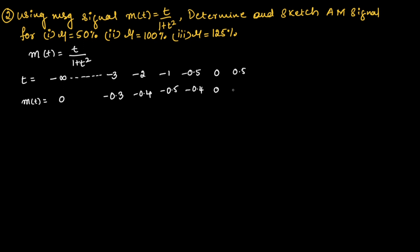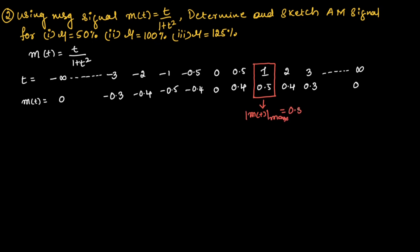For t = 0.5, m(t) = 0.4. For t = 1, m(t) = 0.5. For t = 2, m(t) = 0.4. For t = 3, m(t) = 0.3, and so on. If t = ∞, m(t) = 0. We get the maximum value as 0.5 for m(t) at t = 1, so m(t)_max = 0.5 at t = 1.